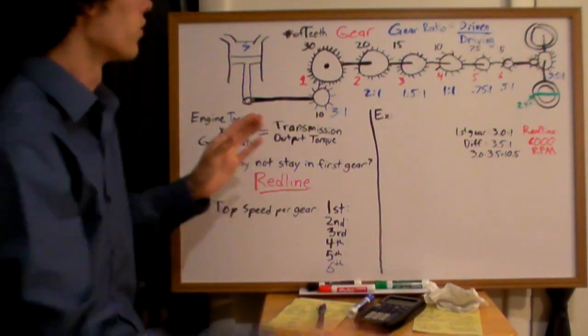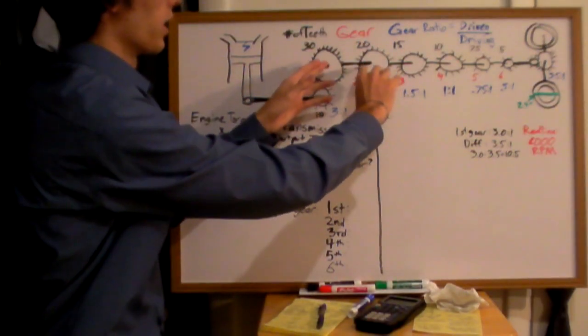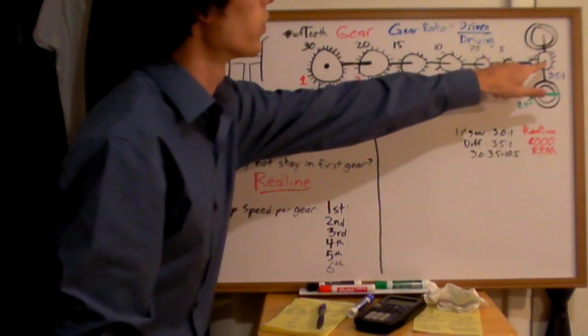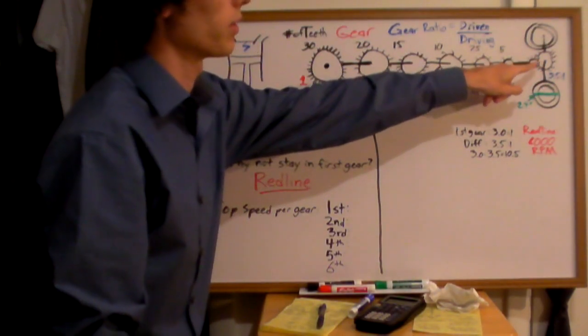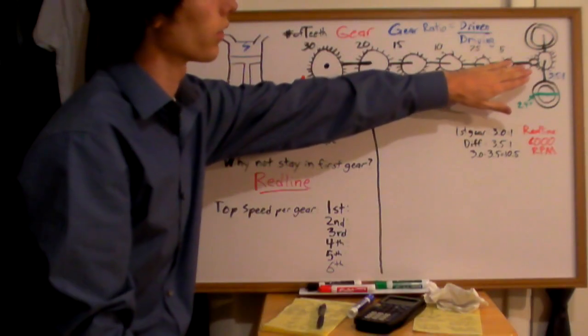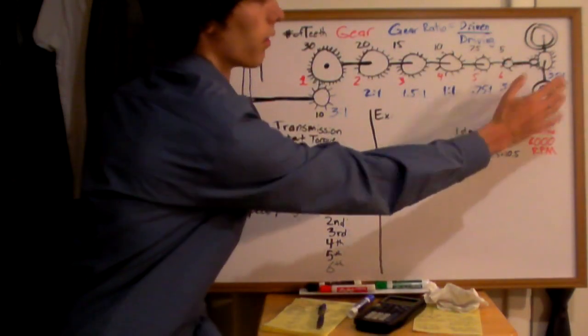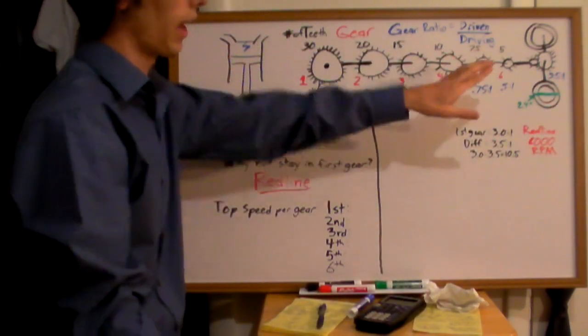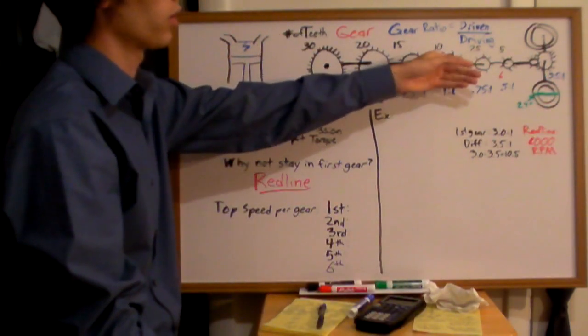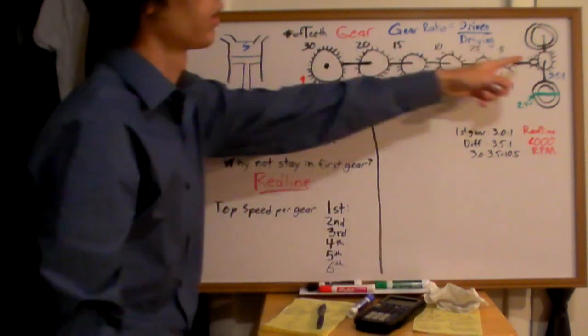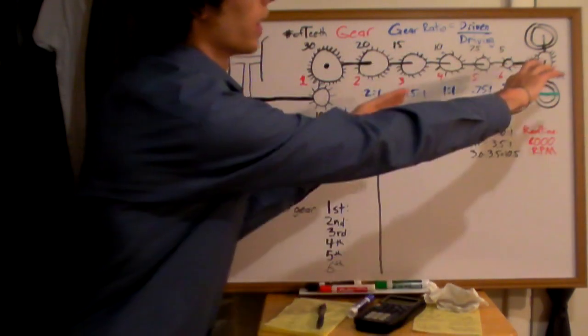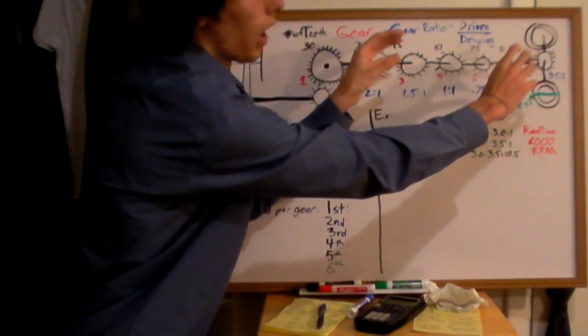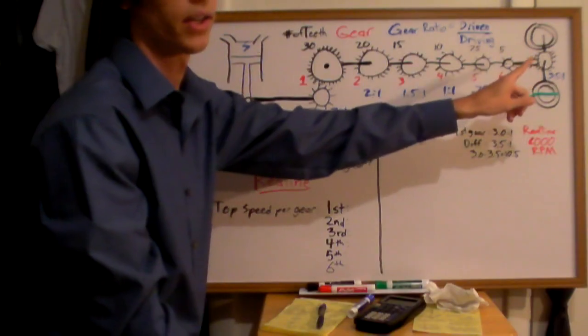Alright. So this here is rotating, and this is your transmission, and finally it gets output to your differential, and these are going to be your driving wheels. Now, these driving wheels also have a gear ratio. For this example, I've just said it's 3.5 to 1. What that means is, every time your transmission rotates once, it's going to take 3.5 revolutions of your transmission for your tire to go around one time.